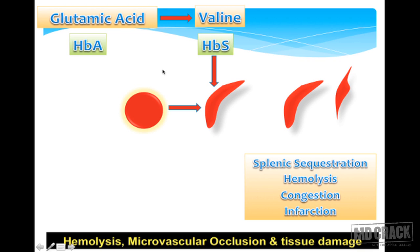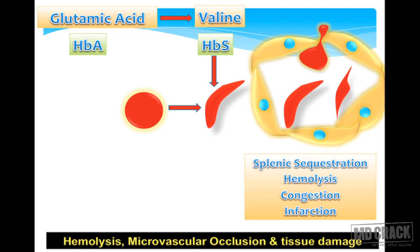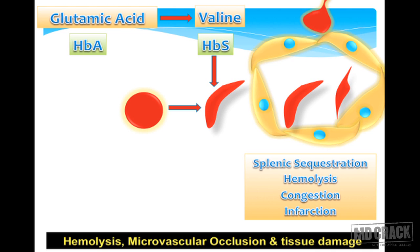Looking at the pathophysiology: the point mutation causes glutamic acid at the sixth position of the beta-globin chain to be replaced by valine. This converts hemoglobin A to hemoglobin S, which is known for polymerization, aggregation, and crystallization. Such sickled RBCs cannot pass through the sinusoidal spaces within the spleen, whereas normal RBCs pass through freely.